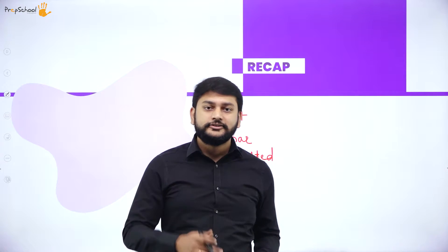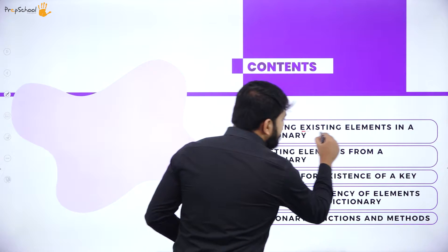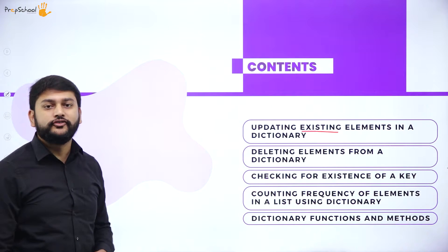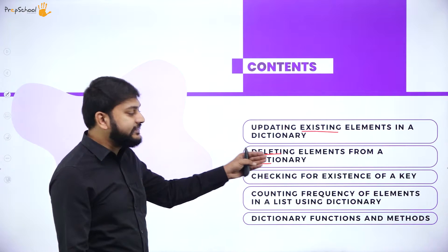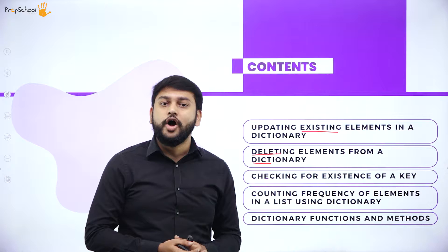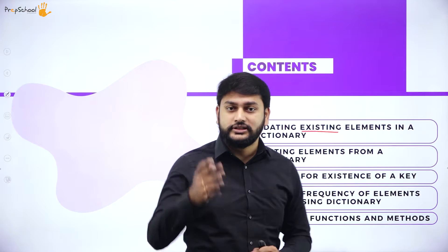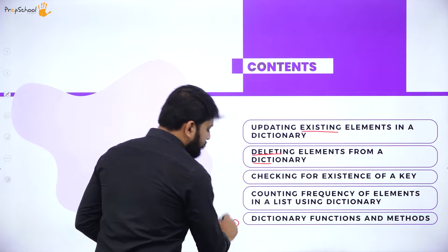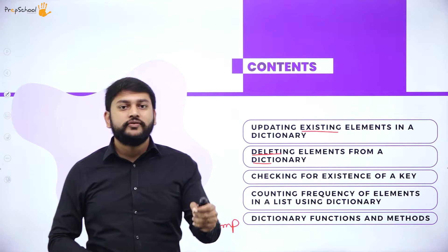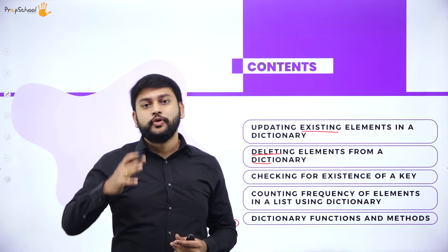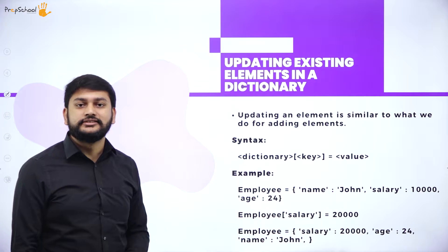In today's session I will discuss: how to update existing elements in a dictionary, deleting an element from the dictionary, checking for the existence of a key, counting the frequency of elements, and different dictionary functions and methods. Please have a notepad next to you and write down the methods and syntax.